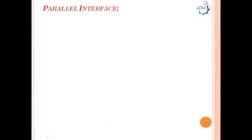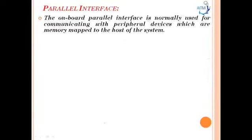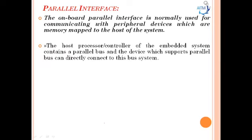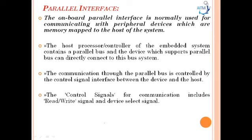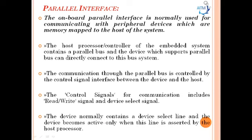The onboard parallel interface is normally used for communicating with parallel devices. External devices are memory-mapped to the host system. The host processor or controller contains a parallel bus, and devices that support a parallel bus can directly connect to it. Communication through the parallel bus is controlled by control signals between the device and the host, including read/write signals and device select signals. A device becomes active only when the device select line is asserted by the host processor.